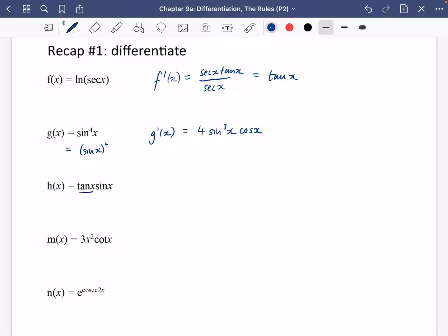Now this one I'm hoping you recognize that you need to use the product rule, so you have that u is tan x and that v is sin x.